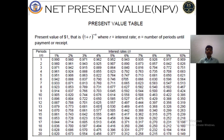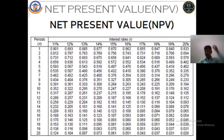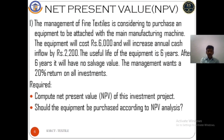Let us start our exercise problems. Please prepare the present value table which I have already shared, as we need it to find discount factor values. The first problem: the management of Fine Textile Company is considering purchasing equipment to be attached to their main manufacturing machine. The equipment cost is 6,000 and it will increase annual cash inflow by 2,200. The useful life is 6 years with no salvage value. Management requires a 20% return on all investments. Compute the NPV and determine whether the equipment should be purchased.